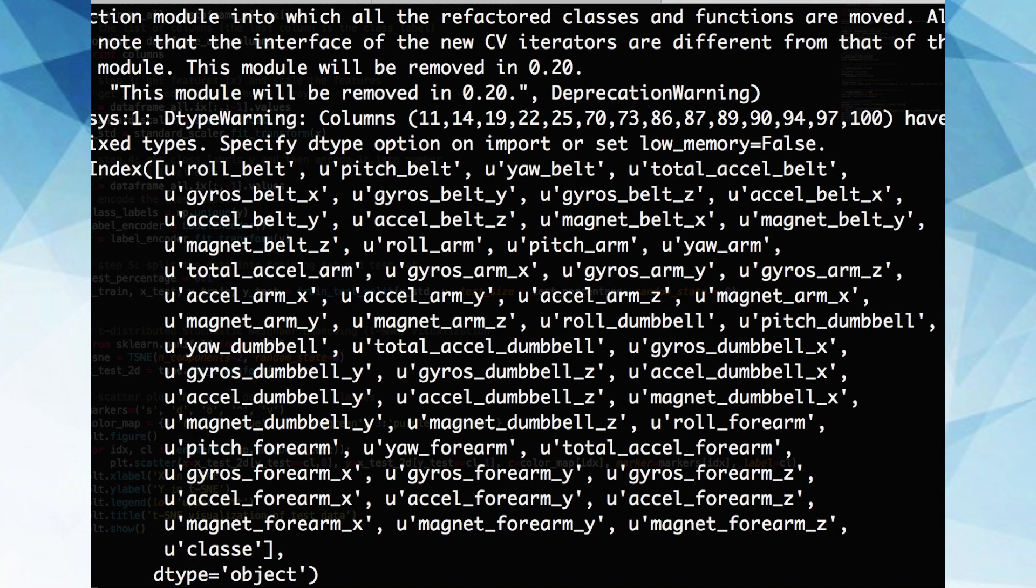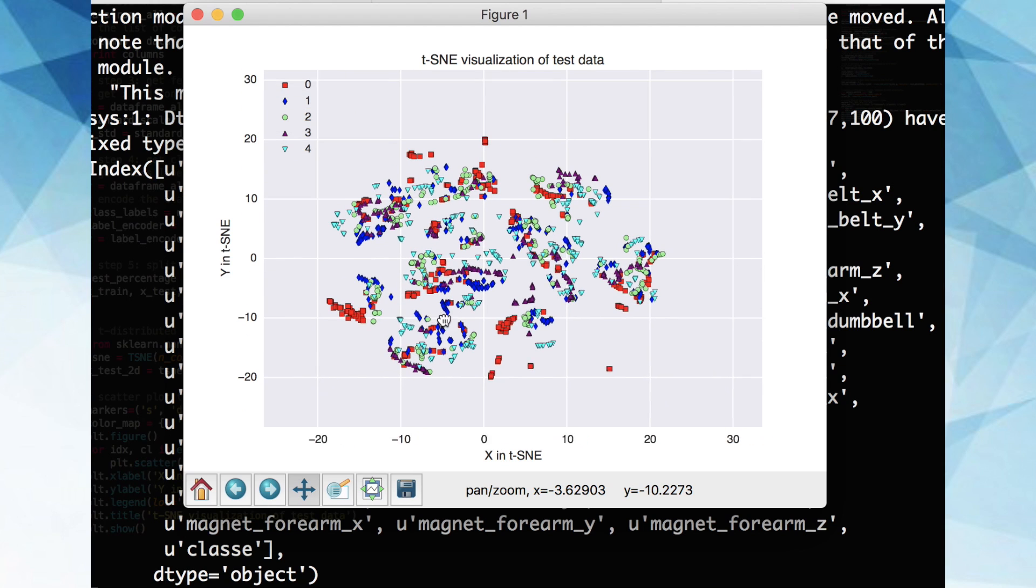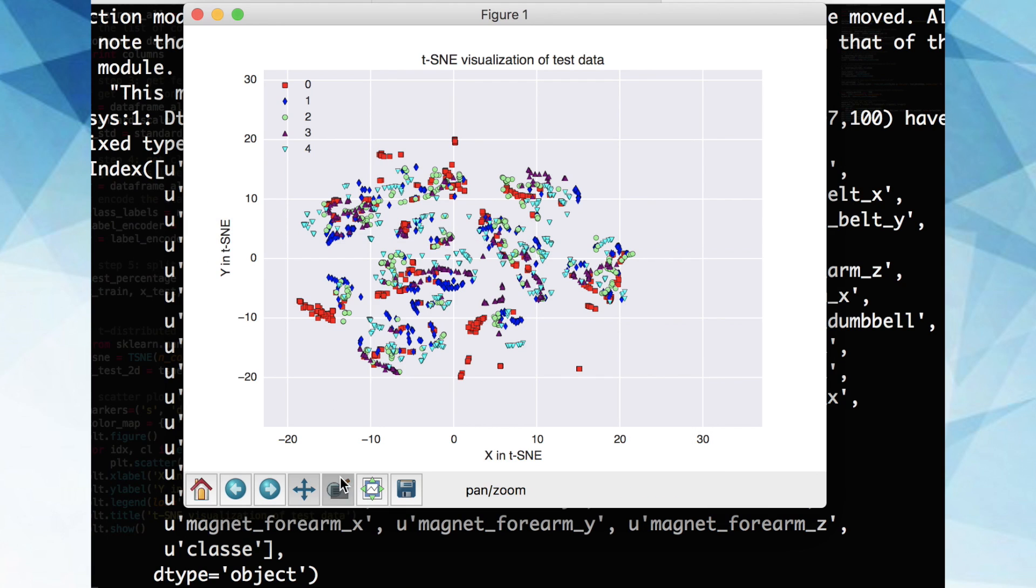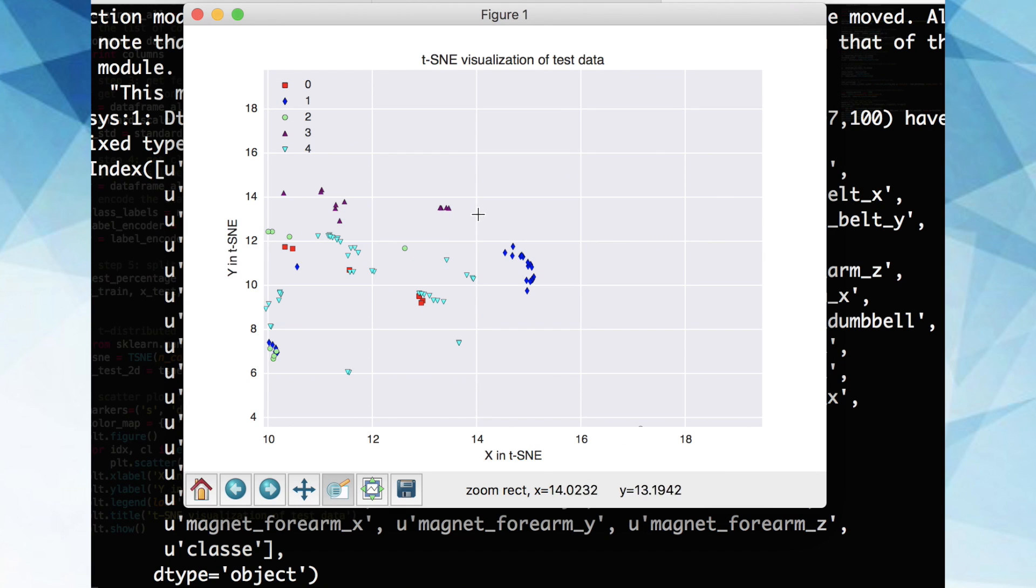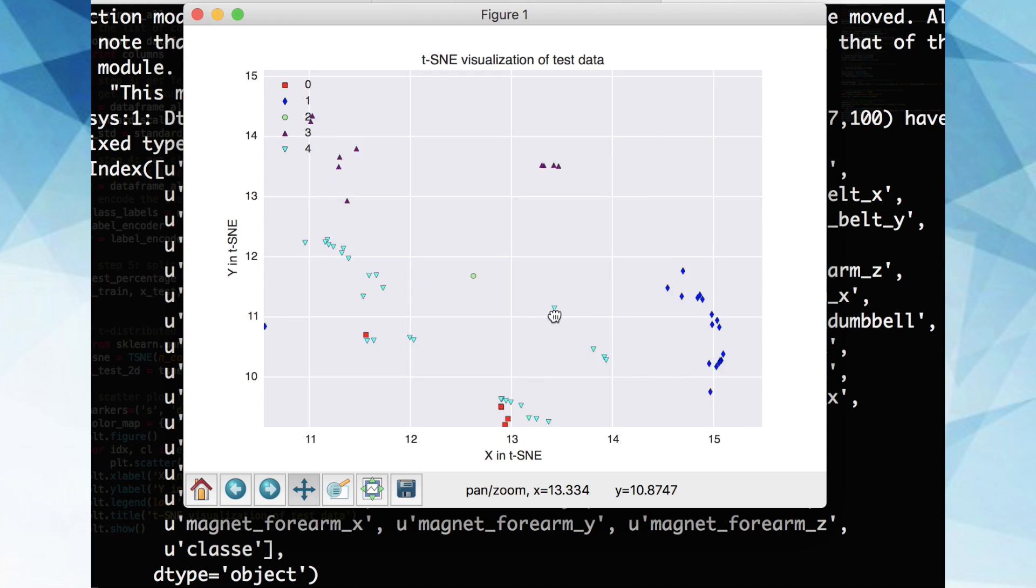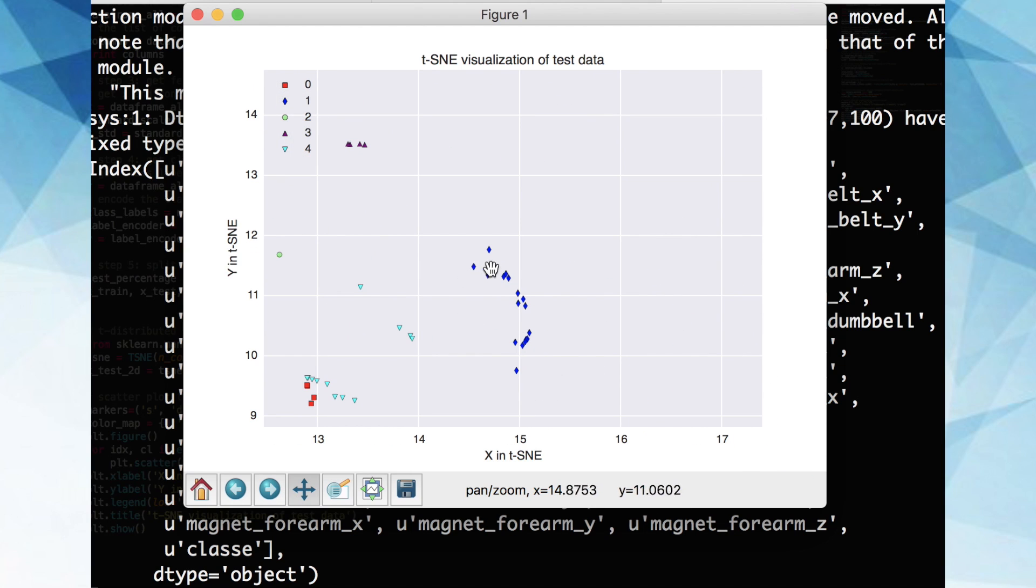We can see here that points of the same class tend to cluster together. And our t-SNE helped make that happen without knowing the classes of the feature vectors we fed it. It learned how to represent the similarity between these classes in a two-dimensional space. We could further analyze this plot to study why certain classes are clustering together, and what conclusions this gives us.